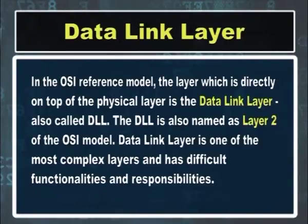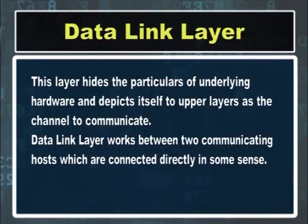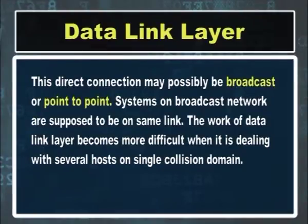In the OSI reference model, the layer which is directly on top of the physical layer is the data link layer, also called DLL. The DLL is also named as layer 2 of the OSI model. Data link layer is one of the most complex layers and has difficult functionalities and responsibilities. The work of data link layer becomes more difficult when it is dealing with several hosts on a single collision domain.